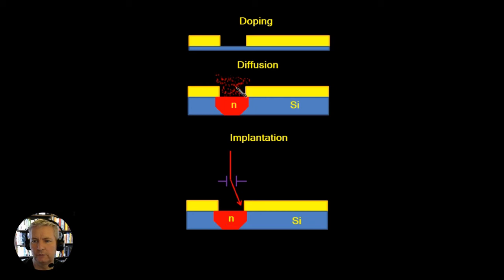Now we don't need to do just diffusion then implantation. There are other processes which implant the ions into the silicon and then we have the silicon heated up and the ions then diffuse further into the silicon. So this is a mixture of both implantation and diffusion.